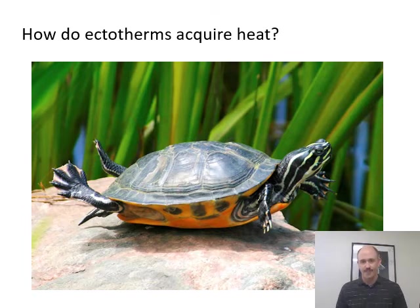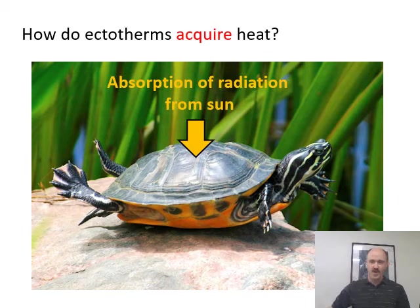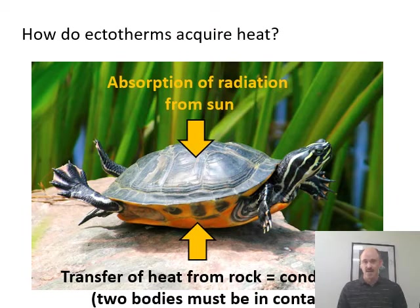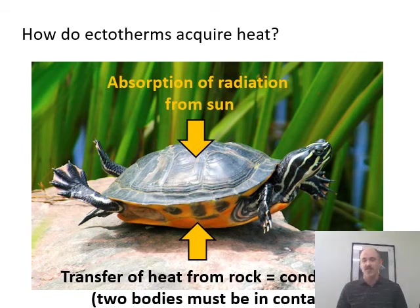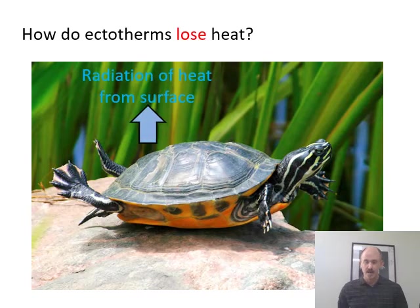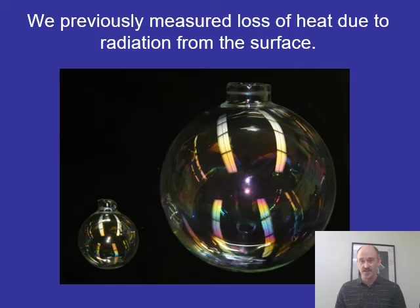Here's a turtle on a rock. Ectotherms acquire heat through absorption from the sun — radiation hits the turtle and is absorbed, warming it up. The rock below the turtle has also warmed from the sun, and the turtle in direct contact with that rock gains heat through conduction. The turtle loses heat through radiation emitting off its body — the same way the glass bulbs we just looked at lost heat.